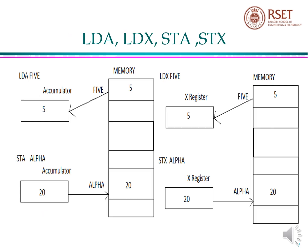Let us see LDA 5 first. LDA 5 means loading the contents of memory location 5 to accumulator. As in the figure, memory location 5 is having the integer 5, and that is taken to accumulator. Now, LDX 5 means load the contents of memory location 5 to X register. As in the figure, integer 5 is stored in memory location 5, so that is taken to X register. Now, STA alpha is a store operation which moves the contents of the register to the memory location. STA alpha means we are moving the contents of accumulator to the memory location alpha. In the figure, 20 is moved to the memory location alpha. STX alpha means store the contents of X register to memory location alpha, so 20, which is the contents of X register, is taken to the memory location alpha.